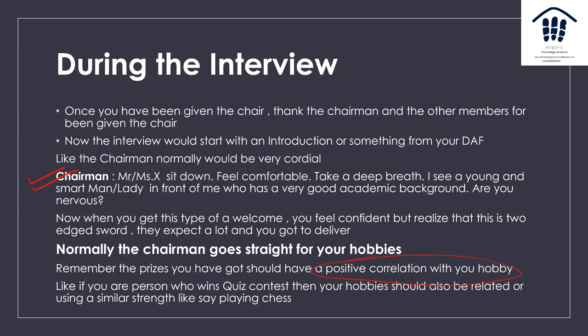Your achievements and hobbies should have a positive correlation — that makes it easy to justify in the interview. Prepare your hobbies in detail. If you play chess and have nationals in chess, that makes sense. People tend to put different hobbies and different achievements, which leads to incoherence. Normally the hobbies and achievements you have would be correlated — like if you have good memory power, you'd be good at chess as well as quiz contests.